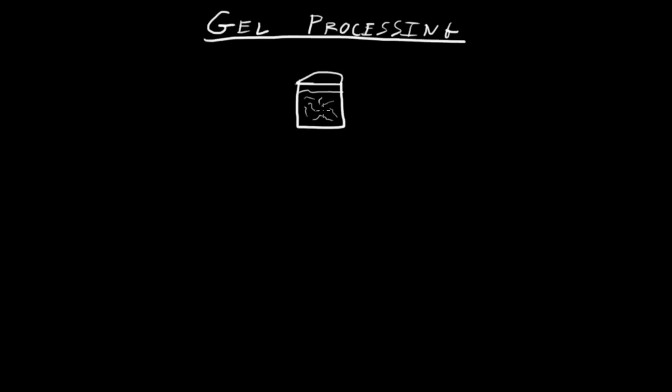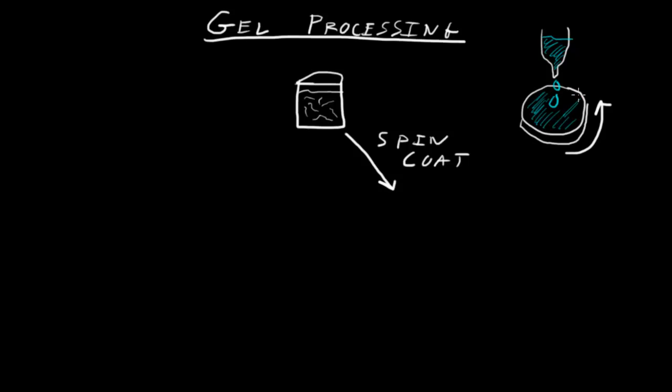If we were to take our solution of Sol and spin coat it, which is a rather neat trick actually, take a disk of a substrate, put it on a motor and spin it, and then drop your Sol solution, so a really dilute solution of your Sol before it gels. Just let it drop onto the surface as you spin.